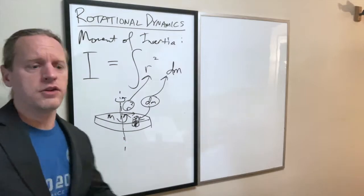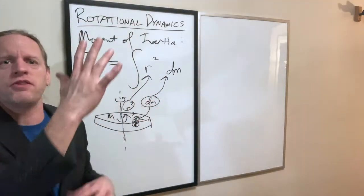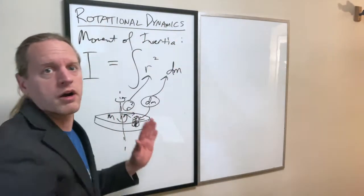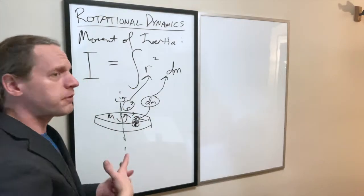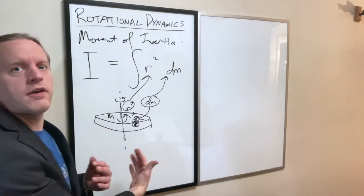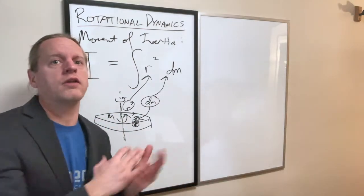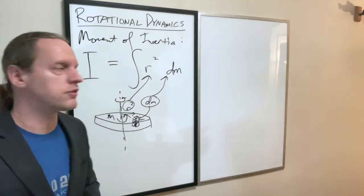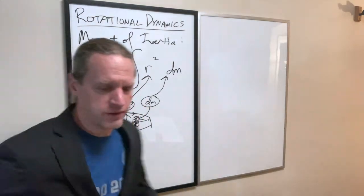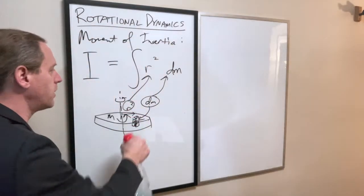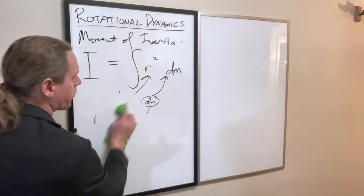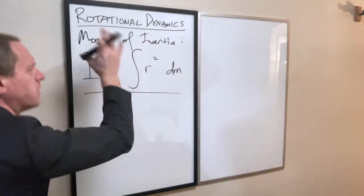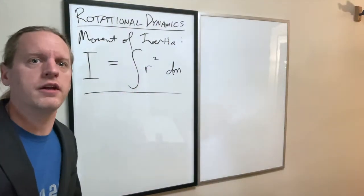I encourage you to go back through whatever section your textbook had on this — it almost certainly had a big table of different shapes showing what the moment of inertia is based on total mass M and radius R. Try to work through those calculations for practice, like one half MR squared for a disc and two fifths MR squared for a solid sphere, among others. I spent a fair amount of time on this because it plays such a central role in rotational dynamics.